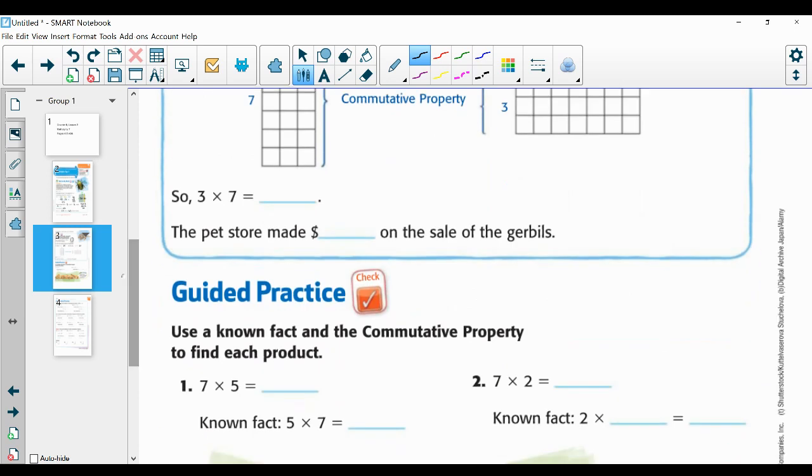Okay. Three times seven is twenty-one. So the pet store made twenty-one dollars on the sale of the gerbils. Note that the dollar sign goes in front of the money amount, not after. I've been seeing this from students, and that is not how you write dollars. Okay. The cent sign goes after the number. So if it was twenty-one cents, you would do it like that. I know we say twenty-one dollars, but the dollar sign goes in front.